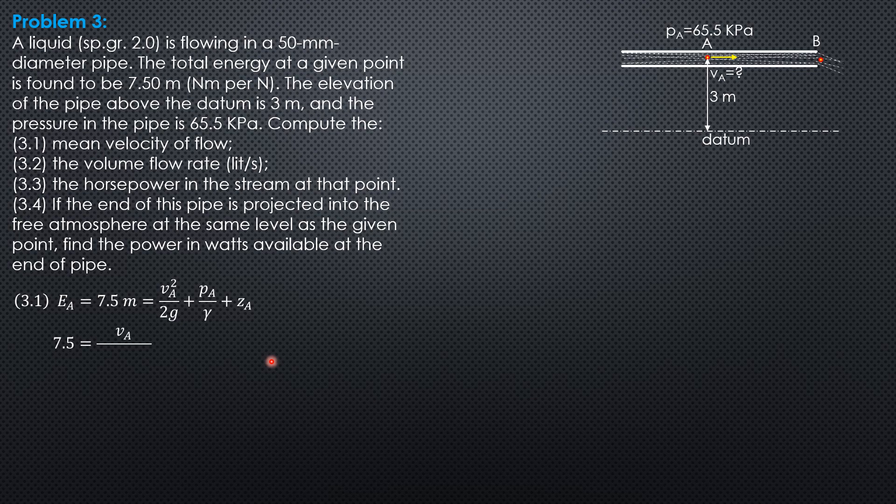7.5 = V_A²/(2×9.81) + 65.5/(2×9.81) + 3. The specific weight equals specific gravity times the specific weight of water. From this equation, we compute the mean velocity of flow at A: V_A = 4.774 m/s.